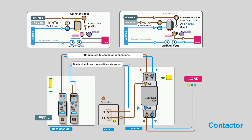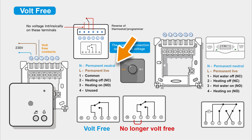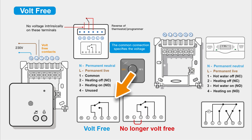Let's look at a few different thermostats to better understand volt-free, because it's important - you'd be putting 230V where the boiler doesn't want it and it will damage the PCB. Heating control manufacturers are sometimes not that helpful with their diagrams. Part of the problem is these universal backplates can be volt-free or not volt-free depending on how you connect them. With Hive, you can have single channel control for a combi boiler or dual channel control. The connections on the backplate are: permanent neutral, permanent live, common, heating off, heating on, and unused.